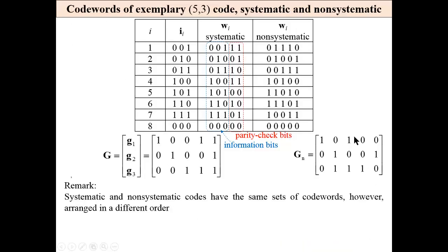In this table we have all codewords for all information words: in this column, the systematic code, and in this column, the non-systematic code. As can be seen, systematic and non-systematic codes have the same set of codewords, however arranged in different order. The assignment of a codeword to a given information word differs between the two codes, but that is the only difference — the set of codewords is exactly the same.